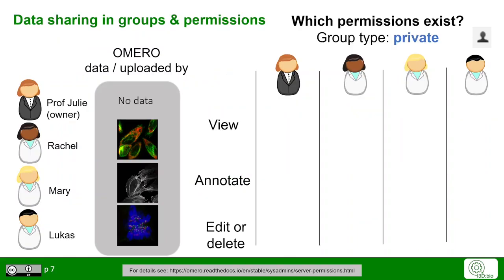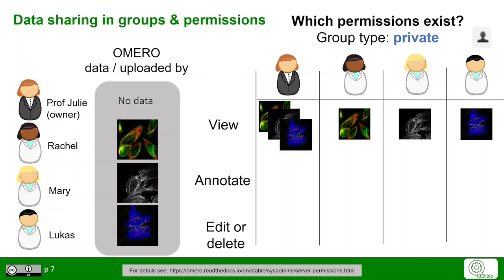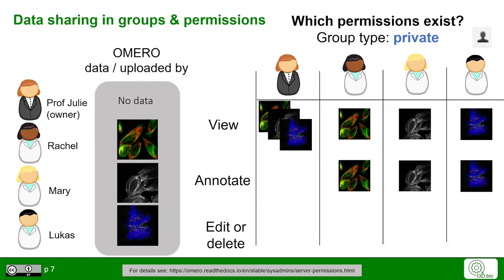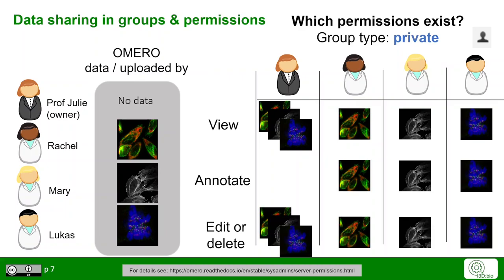Here we look at examples of what this means in practice. In our research group, the professor has no own data. However, Rachel, Mary, and Lucas have their respective images uploaded to OMERO as shown here. Since Professor Julie is the group owner, she can see all the data, while the other members of the group can only see their own data. They can only annotate, delete, and edit their own data, while the group owner has more permissive rights.